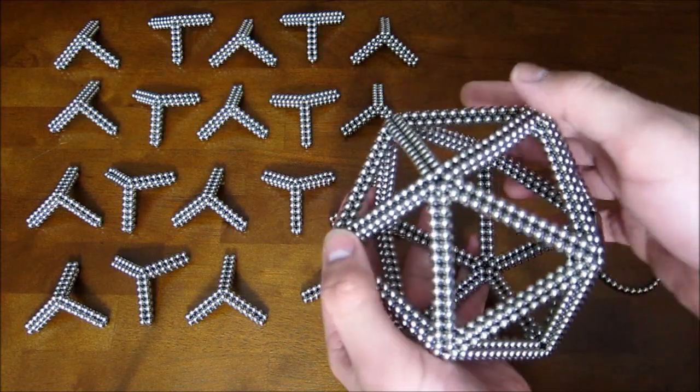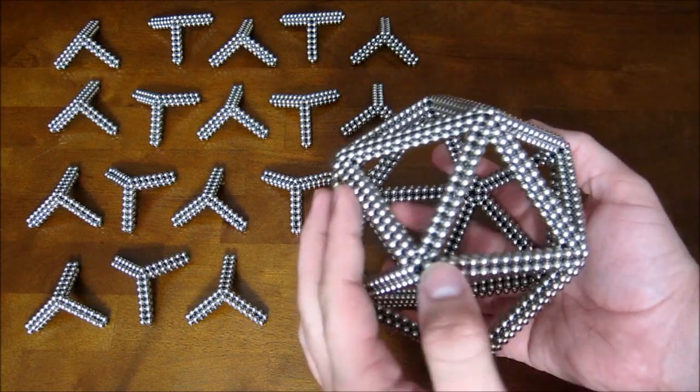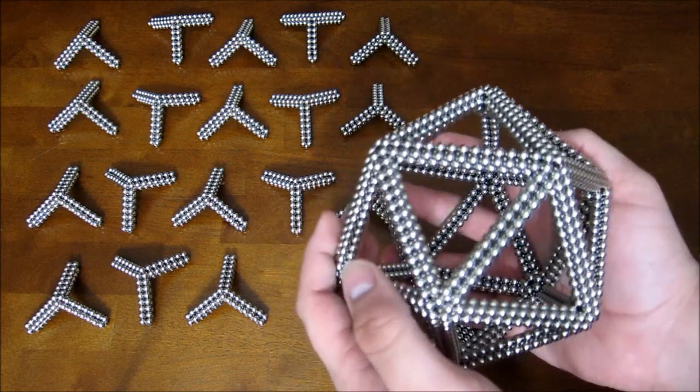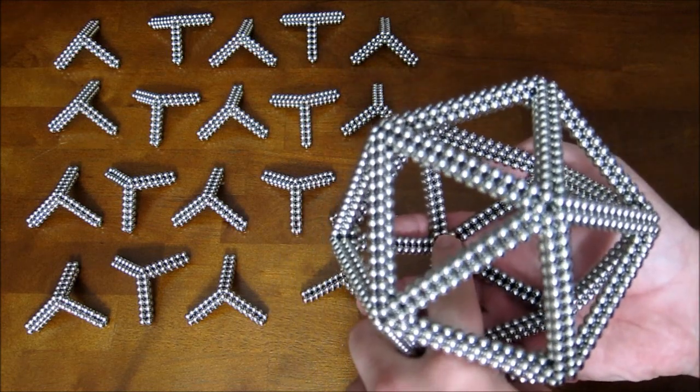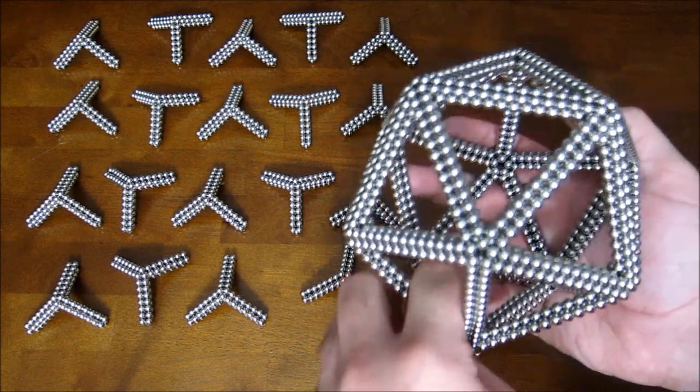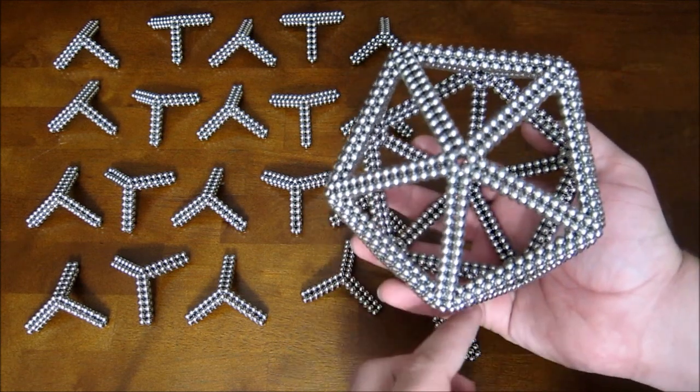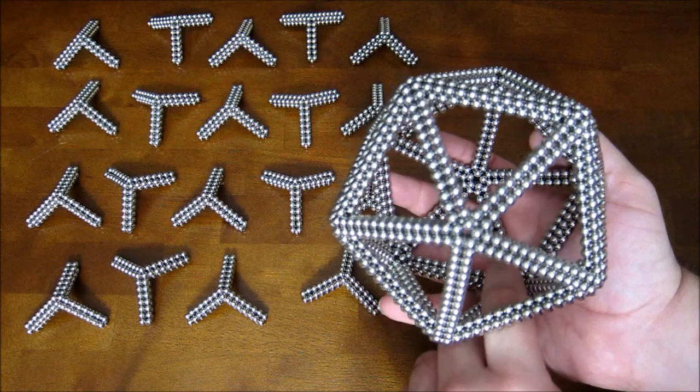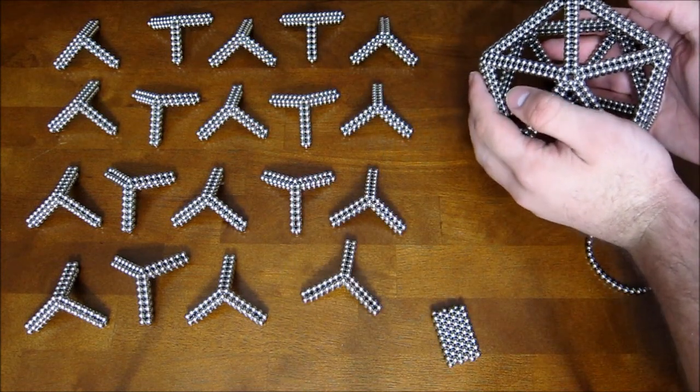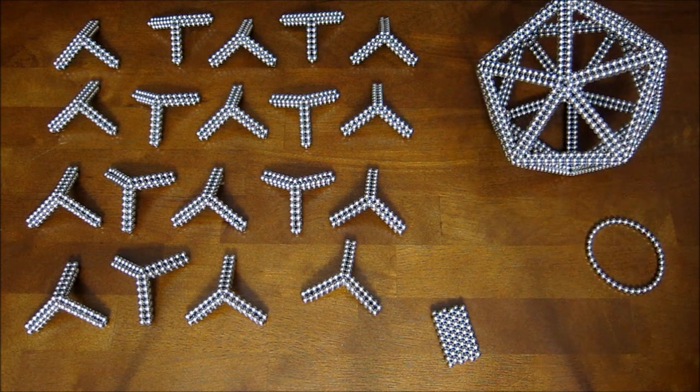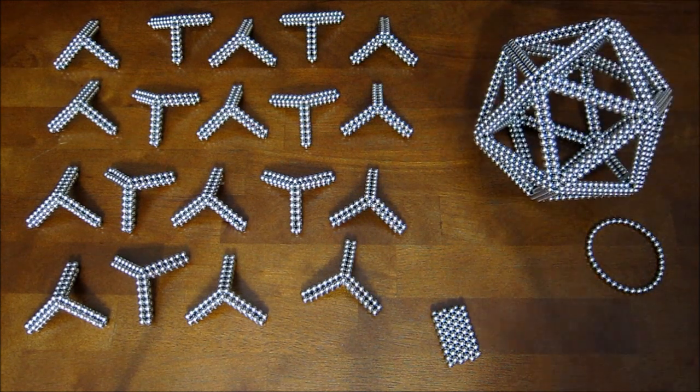Although I shouldn't have said exactly the same. It's the same size, but one small difference is that I put individual pentagons on the inside corners to reinforce it a little bit more. I don't think that's perfectly necessary, but it helps. So if you want to save yourself 60 magnets, you can skip that, and then it would be exactly like in the video.